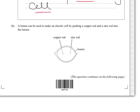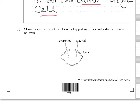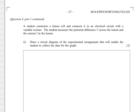And now we get to the core of the question. It's about lemon batteries. So a lemon is used to make an electric cell by pushing a copper rod and a zinc rod into the lemon. So let's have a look at what they're asking. The student wants to construct a lemon cell and connects it in an electric circuit with a variable resistor. The student measures the potential difference across the lemon and the current I in the lemon.